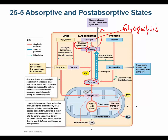Glycerol from triglycerides can be run into the gluconeogenic pathway. Lipids can be broken down into fatty acids and glycerol — glycerol provides gluconeogenic substrate and fatty acids provide energy. Proteins can be broken down into amino acids, and some of those amino acids can be converted to pyruvate, which then goes through gluconeogenesis.